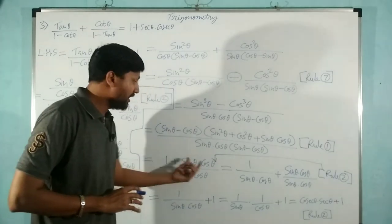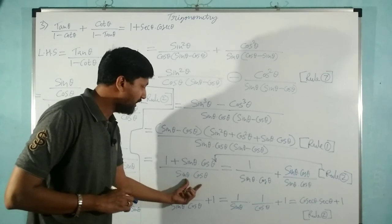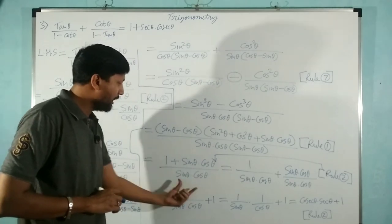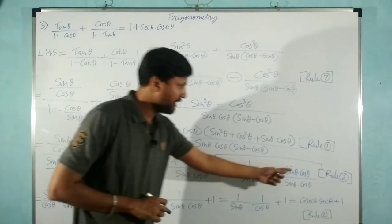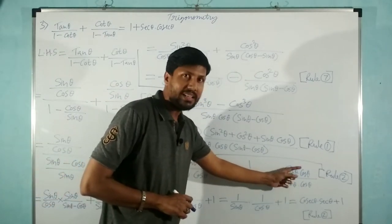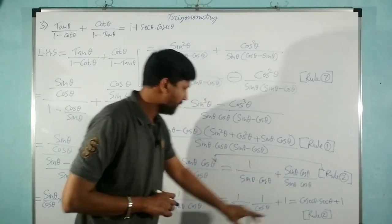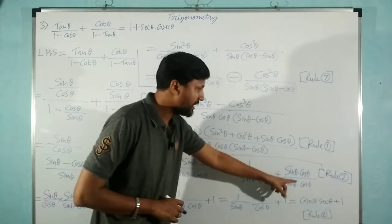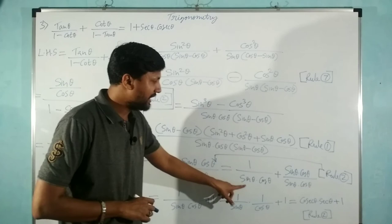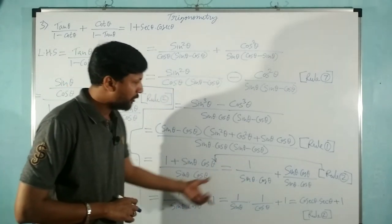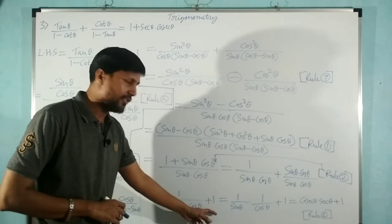I'm going to give each term the same denominator, sin θ · cos θ. So for the term 1, the denominator is sin θ · cos θ, and for the term sin θ · cos θ, the same denominator applies. These two like terms cancel, and sin θ · cos θ over sin θ · cos θ cancels to 1, leaving us with 1 / (sin θ · cos θ).